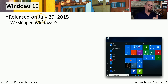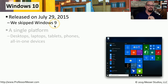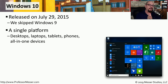Microsoft released Windows 10 on July 29 of 2015, and you'll notice they skipped over version 9 — they went directly from Windows 8.1 to Windows 10. This version of Windows is designed to be a single platform that works on desktops, laptops, mobile devices, tablets, and anything else that you would run Windows on.